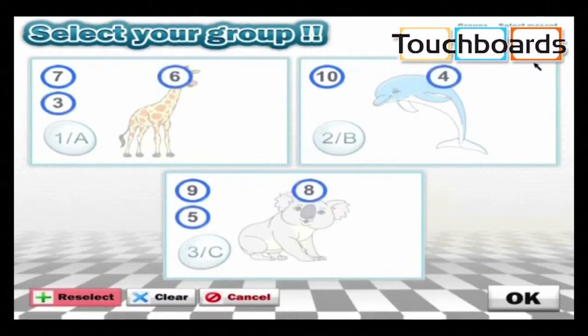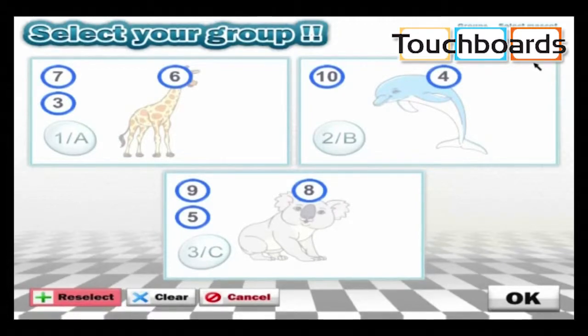They'll press 1A to join the giraffe team, 2B to join the dolphin team, and 3C to join the koala team.